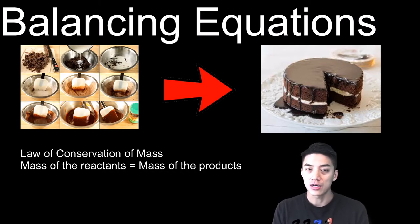So the mass of your raw ingredients, like the batter, the eggs, the flour, the sugar, all of that, once combined, has to equal the mass of the final product, which is the chocolate cake itself.